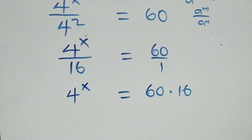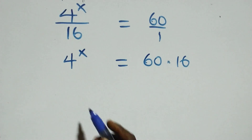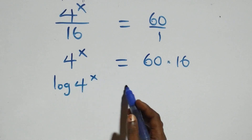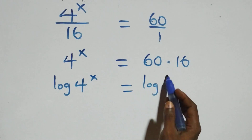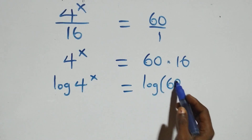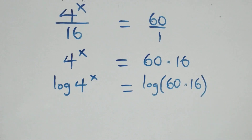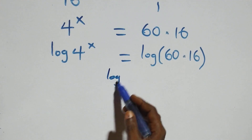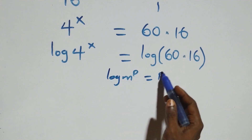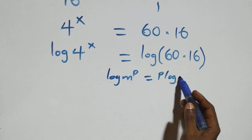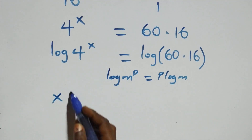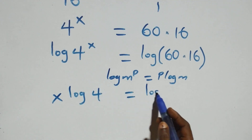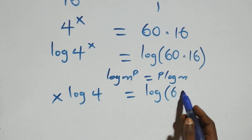Then from here we take the log on both sides: log of four raised to power x equals log of sixty times sixteen. Next, we apply the power rule of logarithms — when we have log m raised to power p, this is the same as p log m. So this becomes x log four equals log of sixty times sixteen.